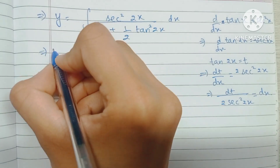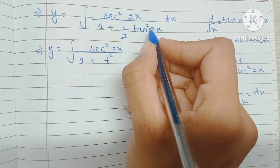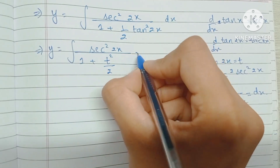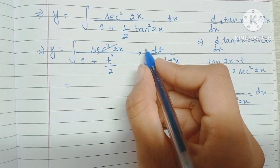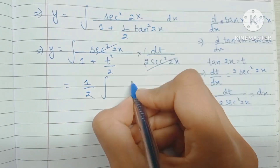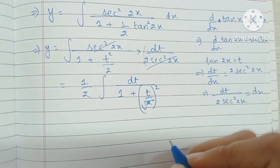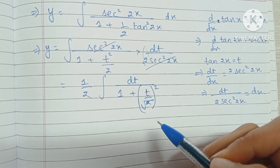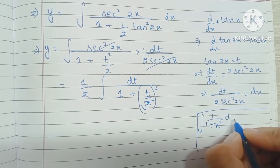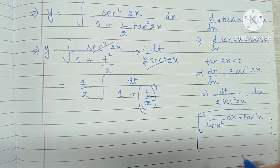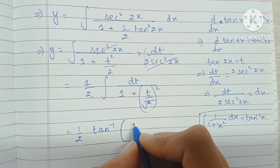This means dt upon 2·sec²2x equals dx. So now changing the integral: y equals sec²2x upon 1 plus t²/2, times dt upon 2·sec²2x. The sec²2x terms cancel and we take the 1/2 outside the integral. We are left with dt upon 1 plus (t/√2)², because t²/2 can be written as (t/√2)². Recall that the integral of 1/(1+x²) dx is tan⁻¹x, so the integral of 1 upon 1+(t/√2)² is tan⁻¹(t/√2), and we divide by the coefficient of t which is 1/√2.